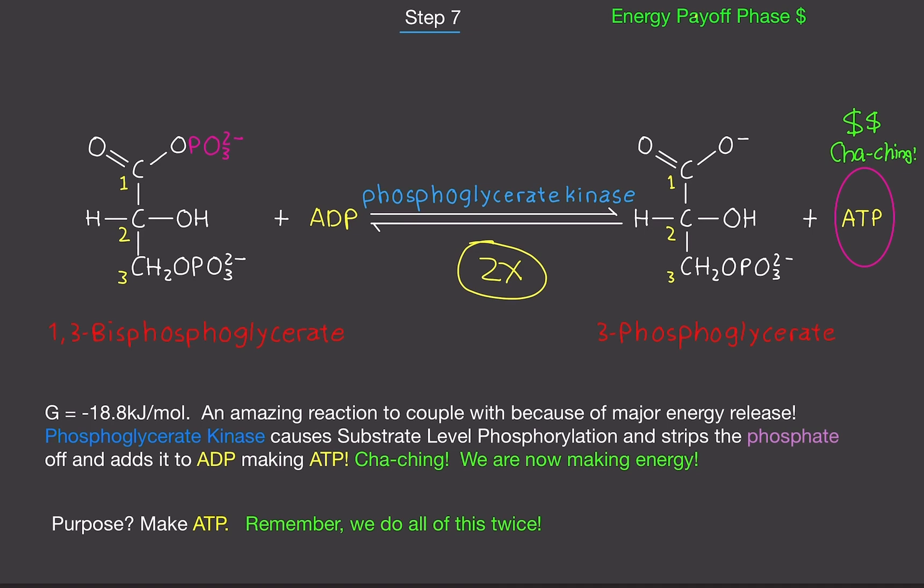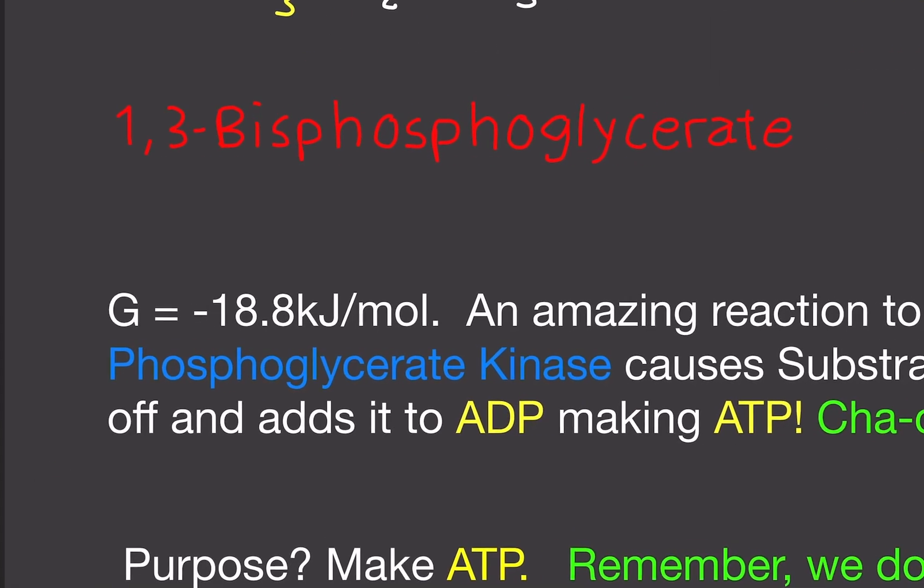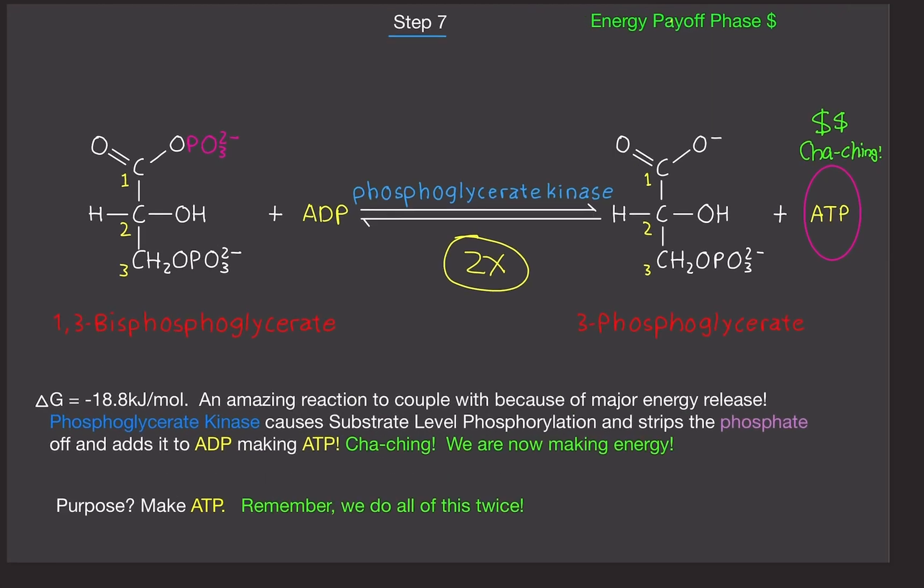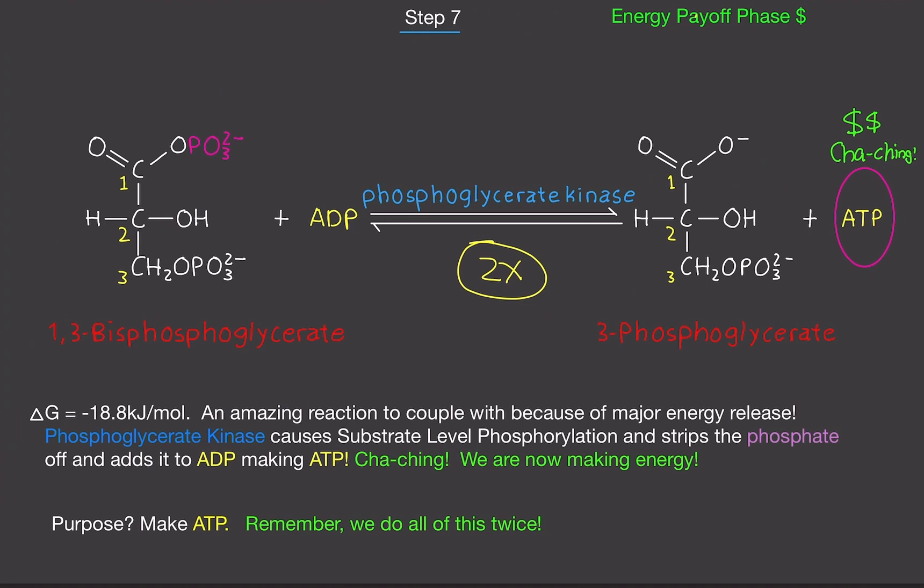The delta G value is negative 18.8 kilojoules per mole. So it's an amazing reaction to couple with because of the major energy release. Phosphoglycerate kinase causes substrate-level phosphorylation and strips the phosphate off and adds it to ADP, making ATP. So cha-ching, we're making energy. And what's the purpose? Well, to make ATP.